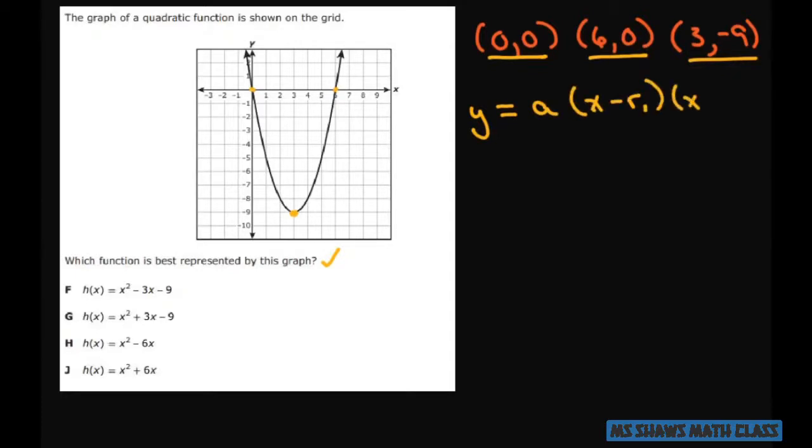R1 and R2 represent your roots or your solutions or your x-intercepts, which are right here. So let's plug those in first. So you have A times x minus zero, and then this one, x minus 6. So that's your standard form.